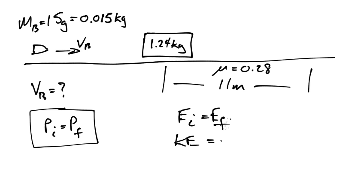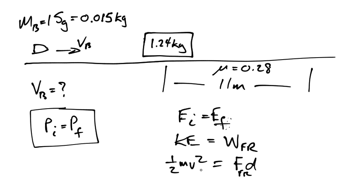And the final energy of the block or of the system is the heat lost to friction. So I can say, work gone to friction. So here I can say, one-half MV squared, and that's going to equal force times distance being force of friction.